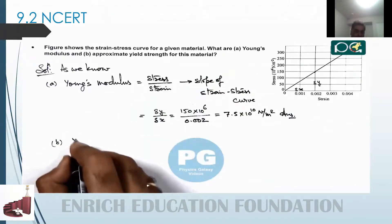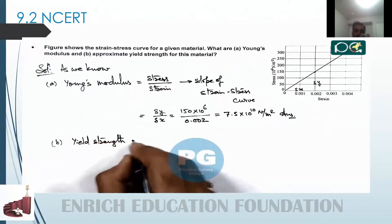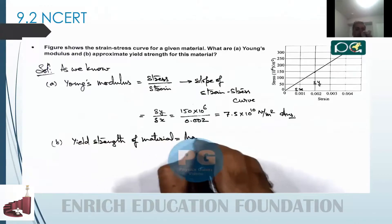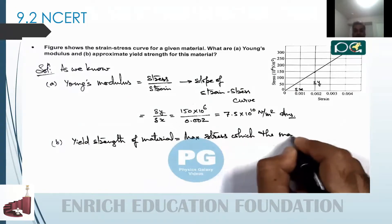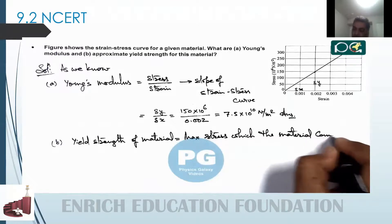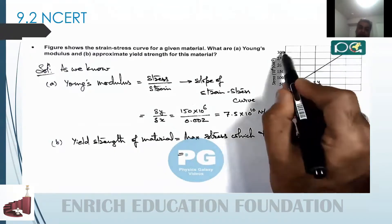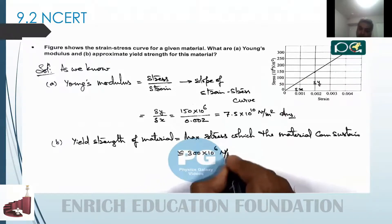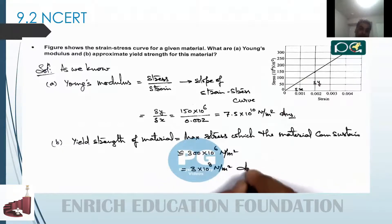That is the result of part (a). For part (b), the yield strength of any material is the maximum stress it can sustain. From the graph, the maximum stress the material can sustain is approximately 300×10⁶ N/m², which is equal to 3×10⁸ N/m². That is the result of the maximum yield strength for part (b) of this exercise.